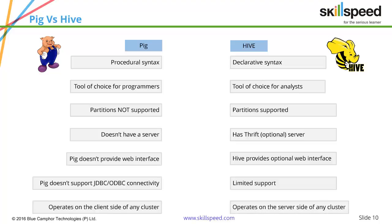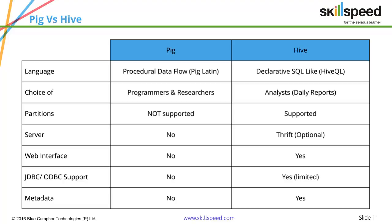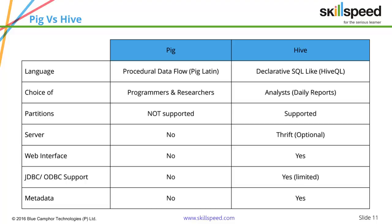Pig doesn't really support JDBC/ODBC connectivity, while Hive fully supports it. Pig is usually suited for programmer-type analyst folks, and Hive is suitable for data warehousing operations. A summary slide also shows the limitations of Pig — lack of server, web interface, and JDBC/ODBC support — whereas Hive has almost all of these features built in.